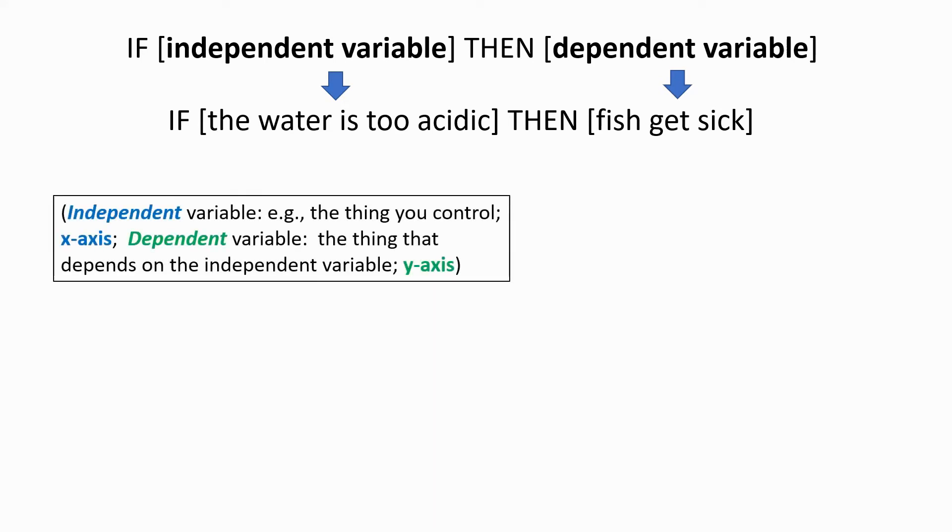And in general, an independent variable is the thing that you measure or control and put on the x-axis of the graph, and the dependent variable is the thing that depends on the independent variable, and it goes on the y-axis. In our example, the health of the fish is the dependent variable on the y-axis, and the independent variable is the pH of the water on the x-axis.